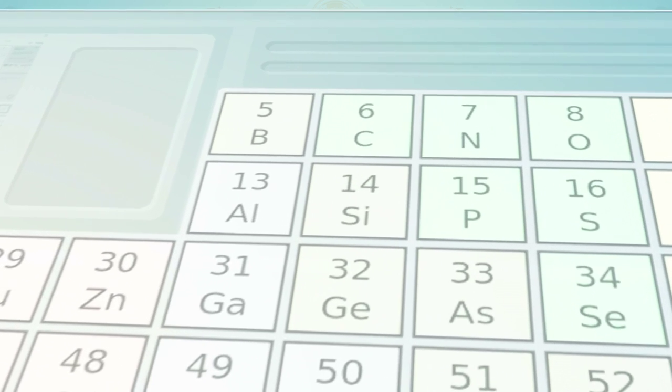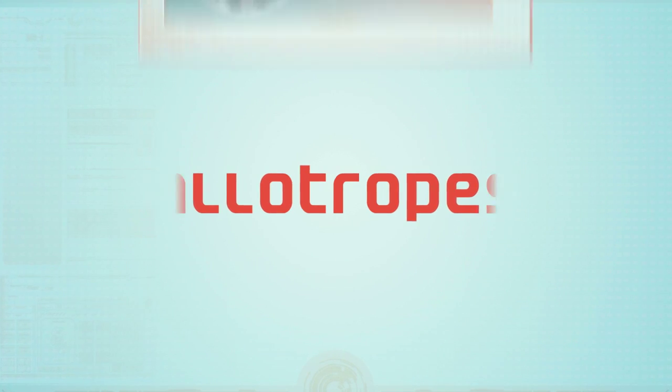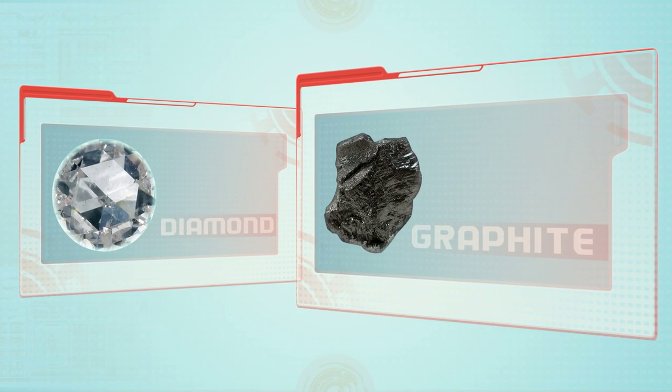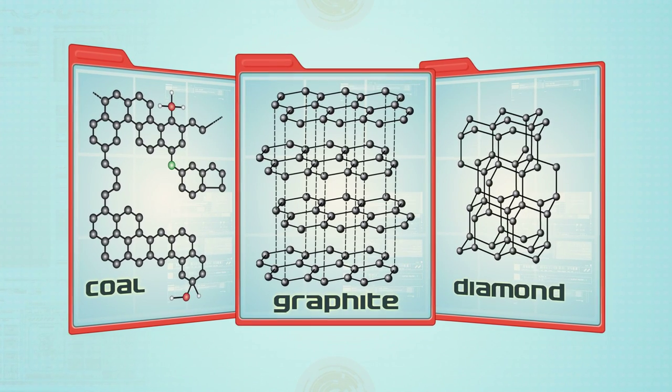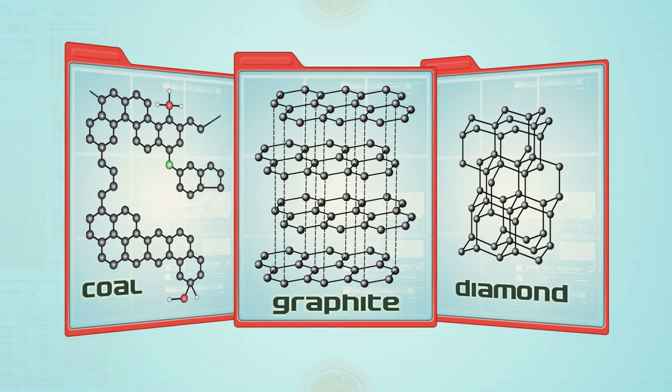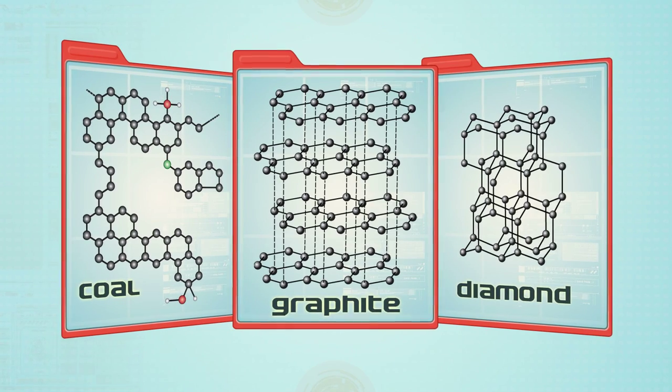Carbon comes in many crystalline forms, called allotropes. The most well-known are diamond and graphite. Allotropes are different forms of the same element, with different bonding arrangements between atoms, resulting in structures that have different chemical and physical properties.